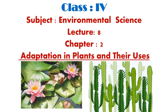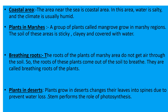Today we will study about other plants. The area near the sea is the coastal area. In this area, water is salty and the climate is usually humid. A group of plants called mangroves grow here.